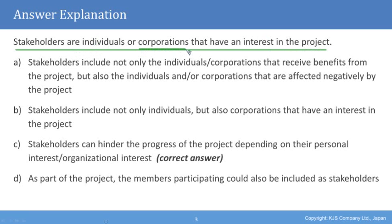Starting with Option A: stakeholders include not only individuals and corporations that receive benefits from the project. The key point is that stakeholders can also be affected negatively by the project — they do not always only benefit. If things go wrong, they can be negatively impacted quite often. So Option A is ruled out as the correct answer.